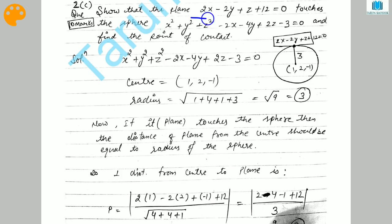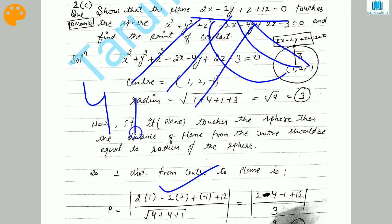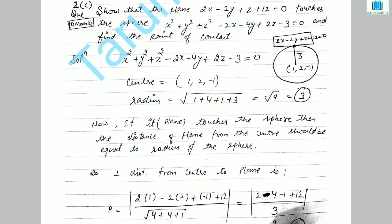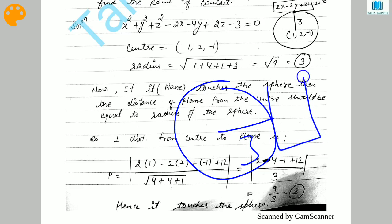When we divide by 3, we get the distance value equal to 3. Since the distance equals the radius (which is 3), the plane is definitely touching the sphere — we have proved it. Now, in the next portion of this question, we have to calculate the point of contact.